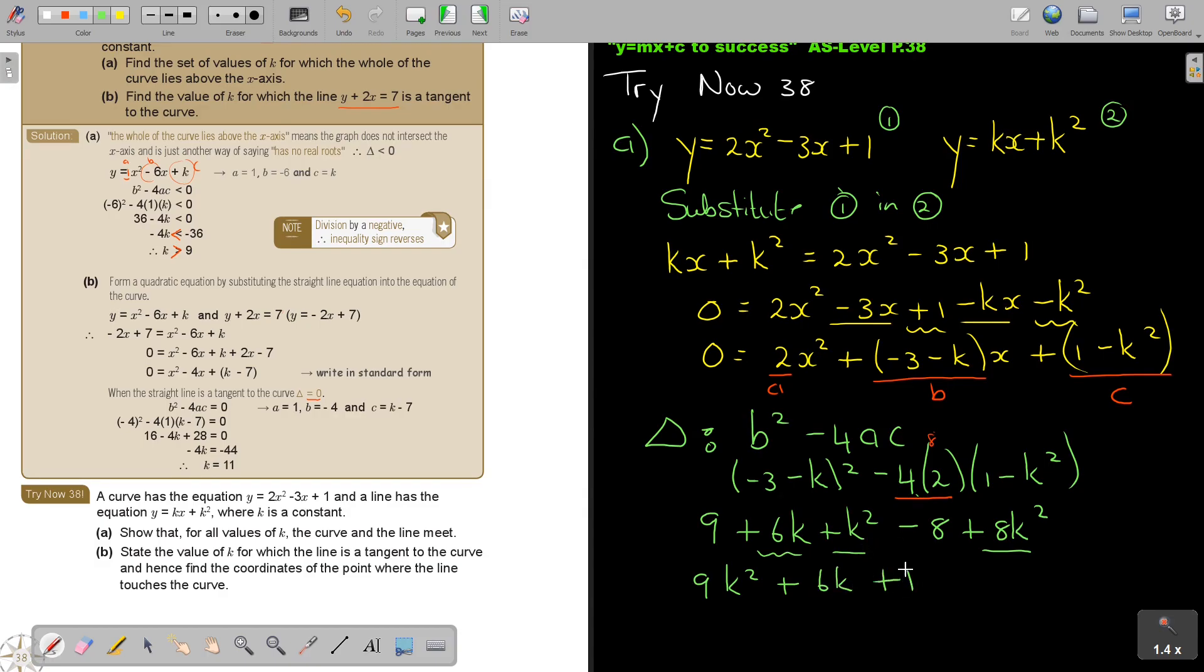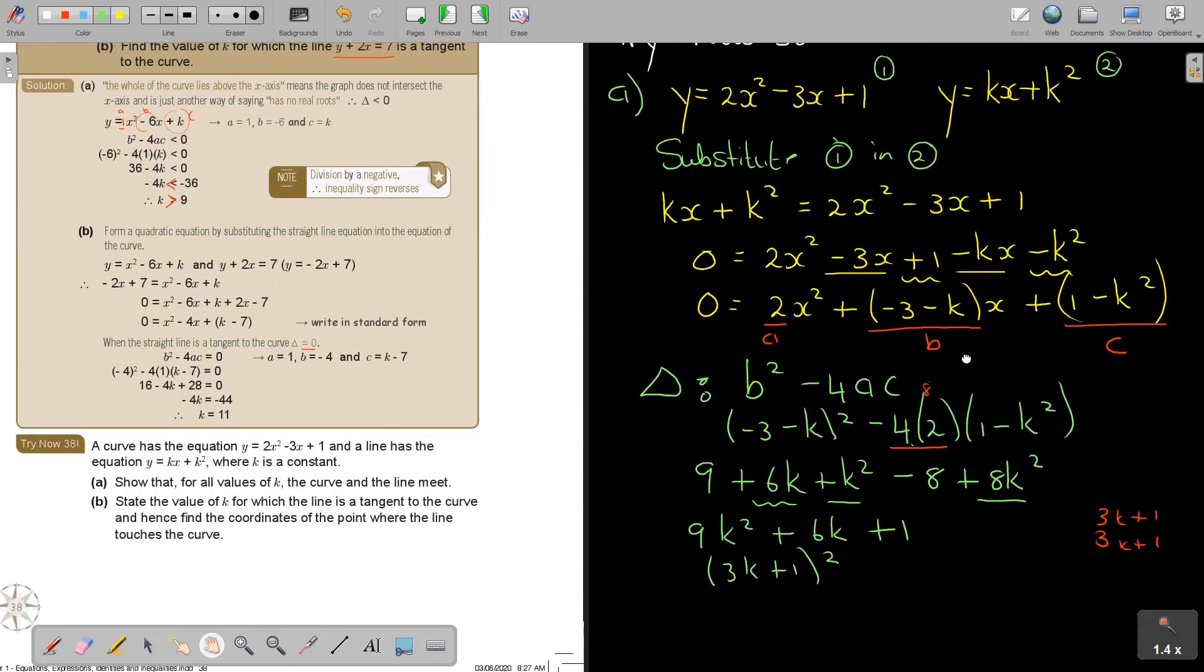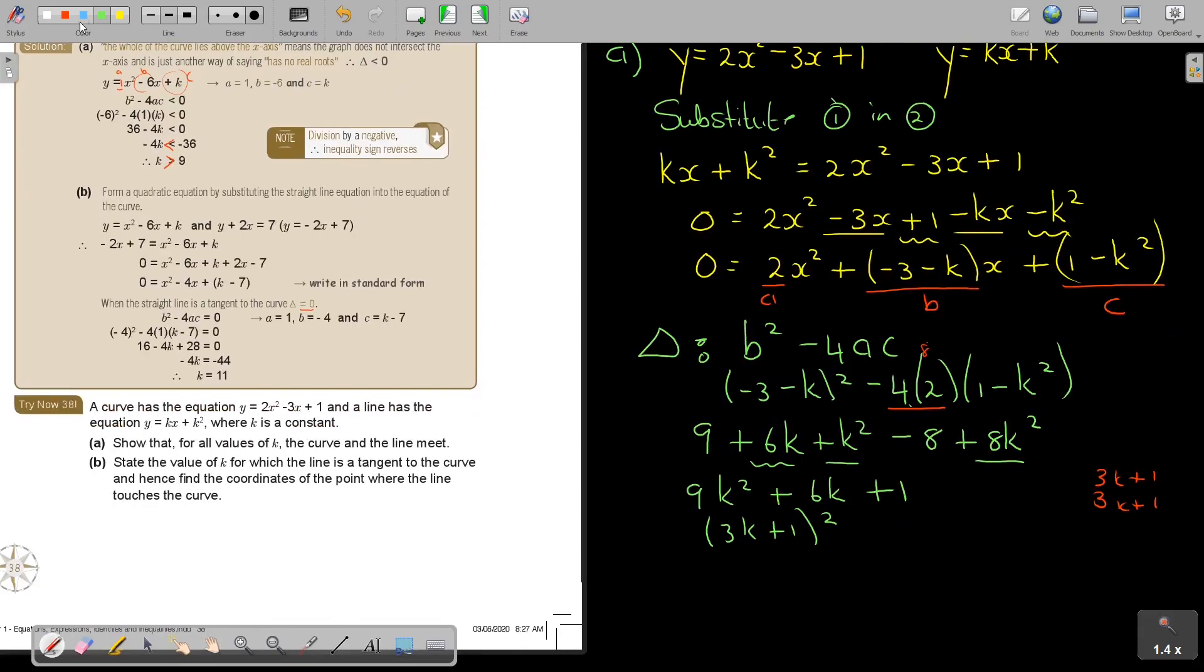Now this can factorize. So let's quickly see what can it factorize to. If this is 3 and 3, 1 and 1. So 3 plus 3 is 6. The signs are the same. Plus, plus, plus K, K. So I'm going to have 3K plus 1. Do you see it's exactly the same square? So, and now, now I end up by this.